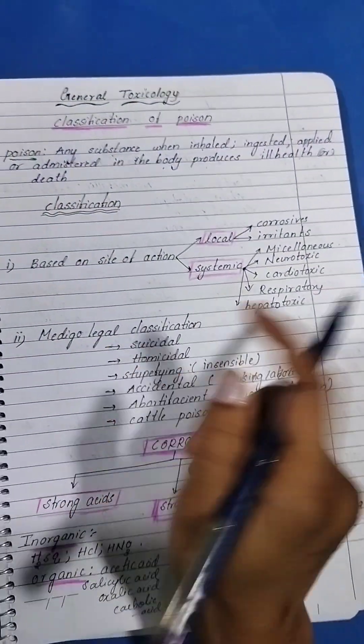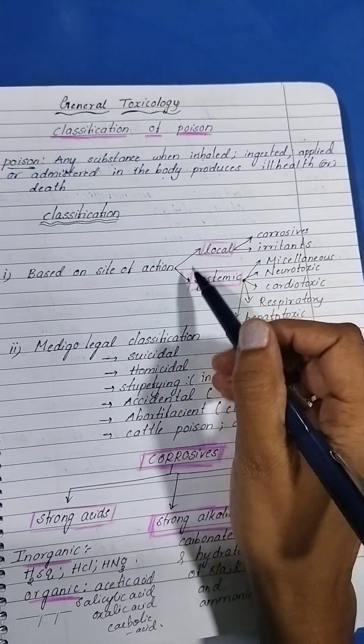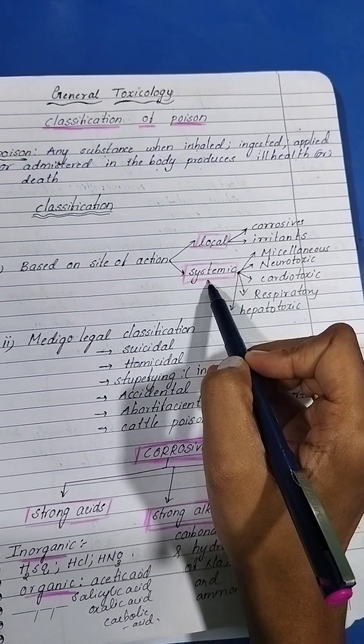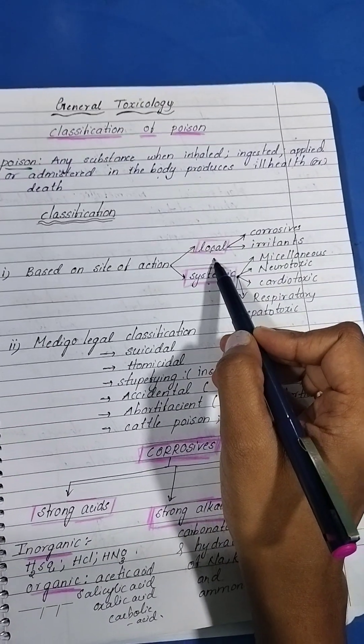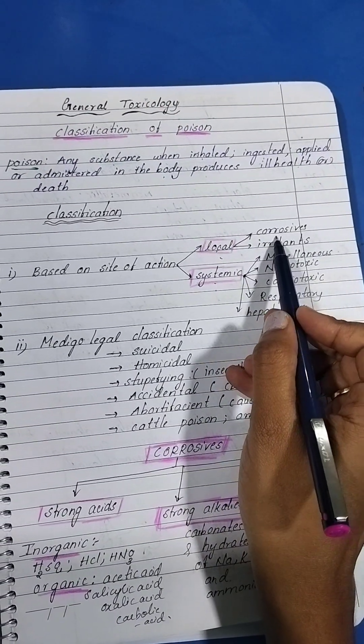Based on the site of action, it's like local and systemic. Local action includes corrosives and irritants.